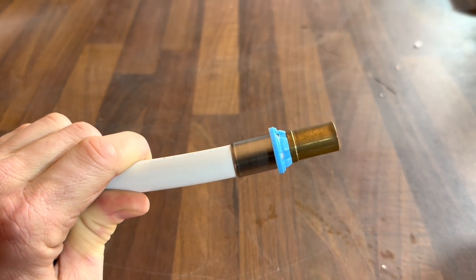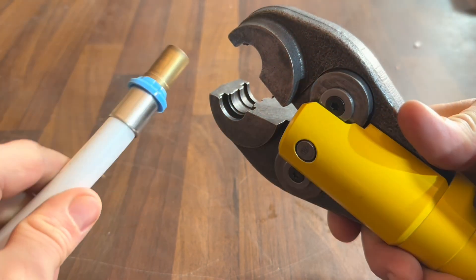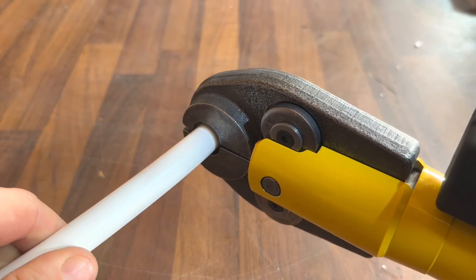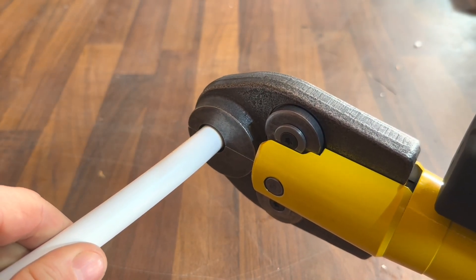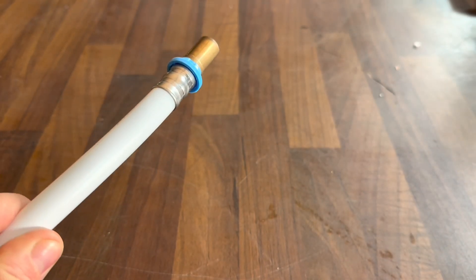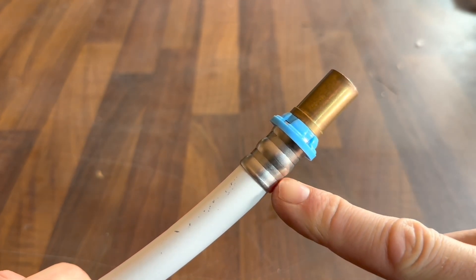Once it's crimped you get a really obvious crimp marking on the fitting. So pop that into the press tool, locate it in the jaw and then press it. You can see that very obviously crimped on those two o-rings.